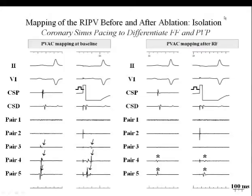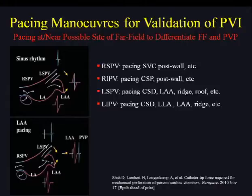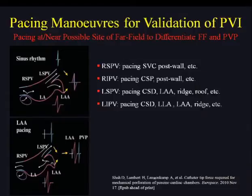We can also add a second transseptal catheter for more refined far-field pacing. If you pace at the site where the far field most likely originates, you will completely anticipate the far-field potential. For the right superior PV, place an extra pacing catheter at the SVC. For the right inferior PV, pace the posterior wall. For the left superior PV, pace the left atrial appendage. For the left inferior PV, pace the low lateral atrium. Using an extra catheter is extremely helpful for differential pacing of signals.